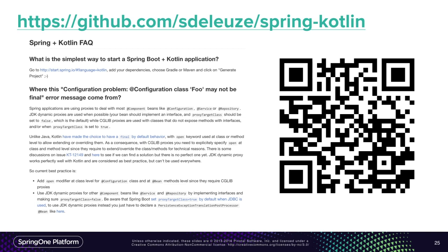If these two friction points are fixed in Kotlin 1.1, that will work very well — it already works pretty well, but those are my two main concerns. I have created a spring-kotlin project which is mainly a FAQ currently, putting documentation about these friction points and advice about how to write a Spring and Kotlin application. Feel free to have a look if you want more details.